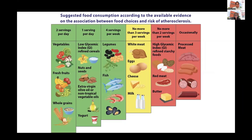This information is also on the SingHealth website. The things to avoid include processed meats like sausages and lap cheong, high GI refined starchy foods like instant noodles and white bread, and fatty meat and margarine, which is a palm oil derivative high in trans fat.